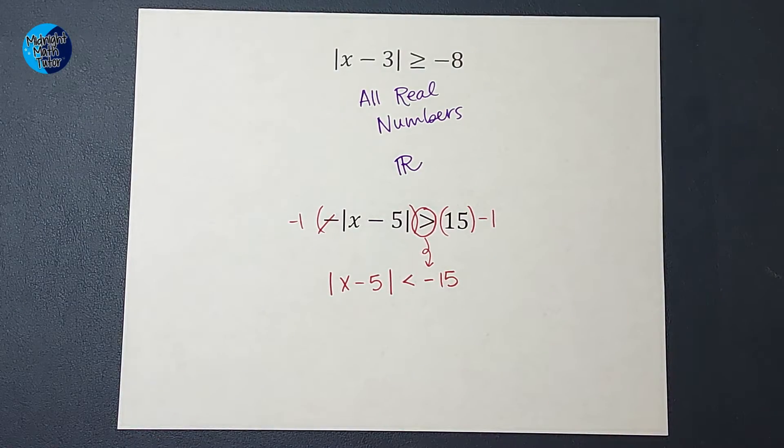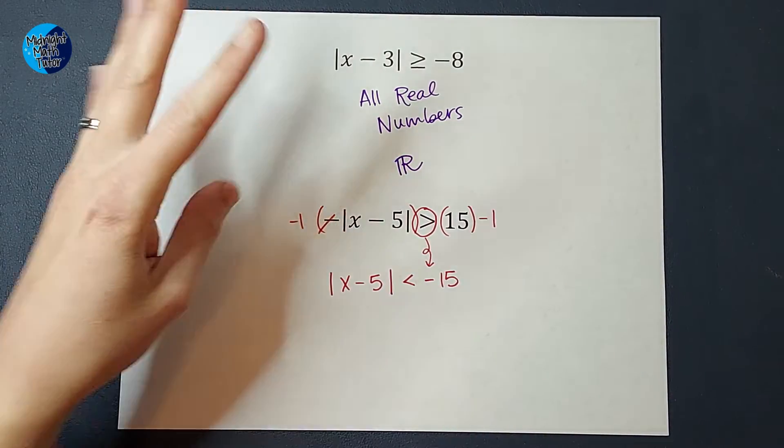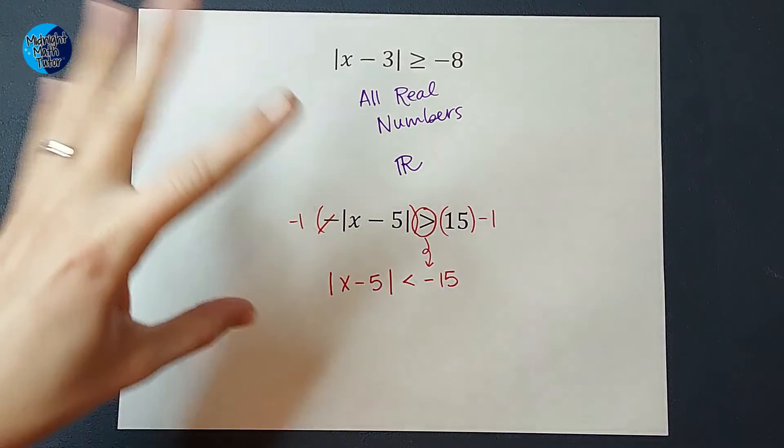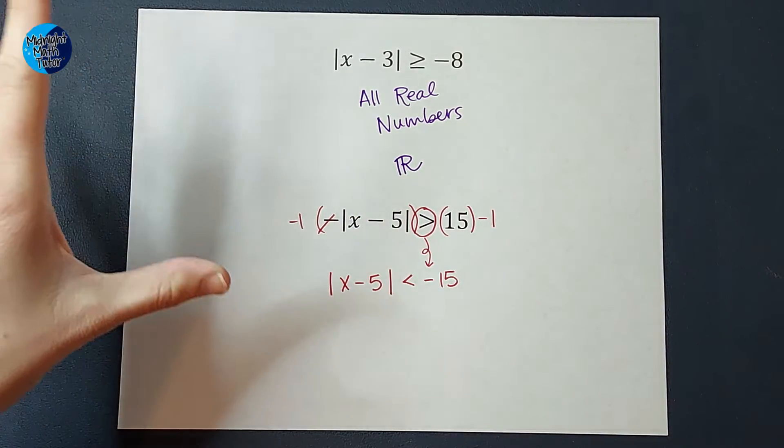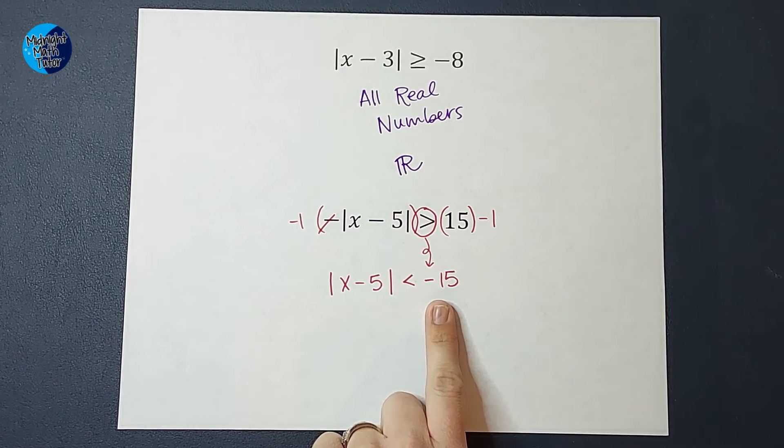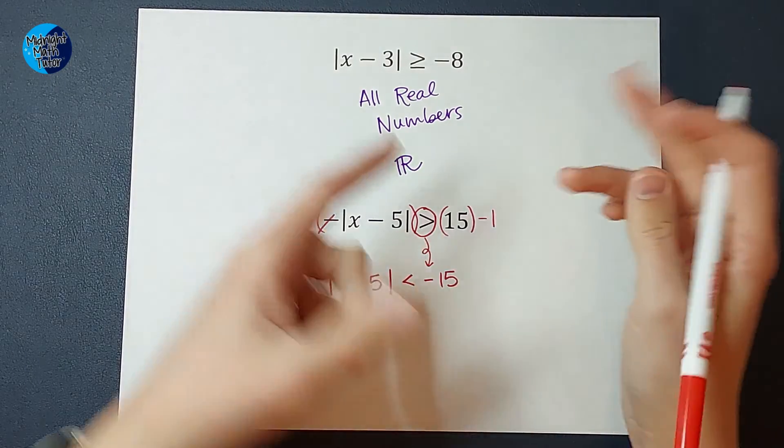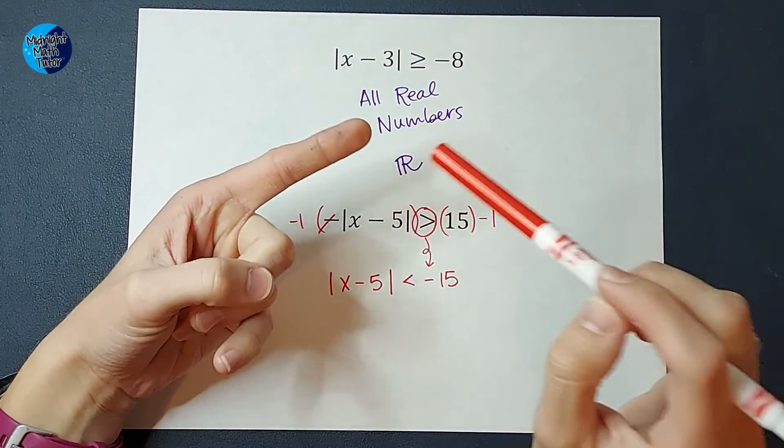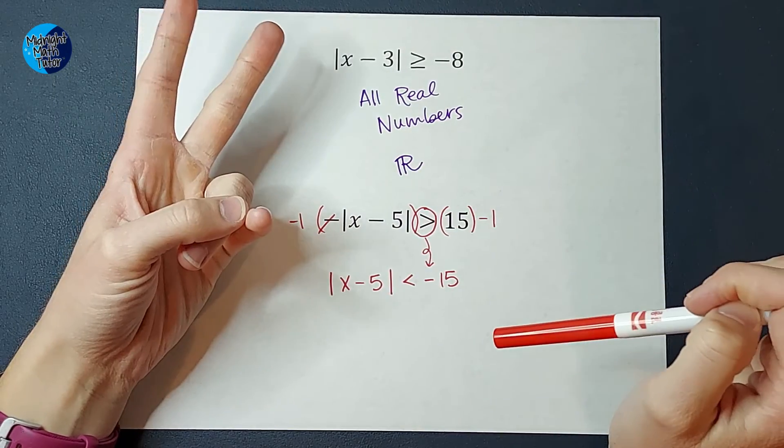So if I was doing this on my homework or something, this problem at first might not have given me like negative vibes, like no solution or all real number vibes. But once I did that, I'm like, ooh, I've got a negative over here, which means the answer to this is either going to be all real numbers or no solutions, right?